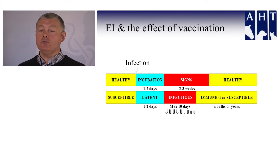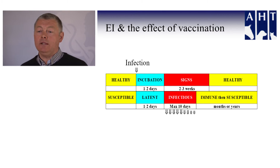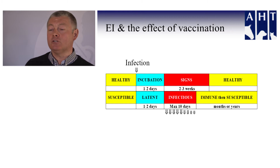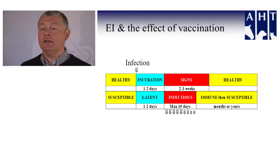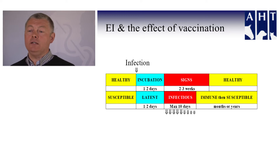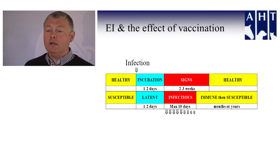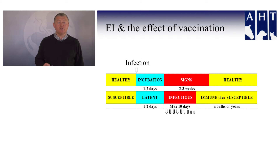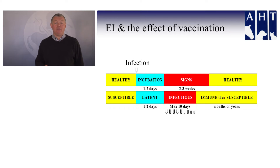When a healthy susceptible animal meets an infection, it goes through a very short period where it has no signs and is not infectious. But after a few days, the horse starts to develop signs — coughing, nasal discharge, raised temperature, and being off food. At this time, the horse starts to become infectious and shed virus, which it will do for up to maybe 10 days at maximum. Then, as the immune system of the horse kicks in, it will return to health and become immune against that infection.